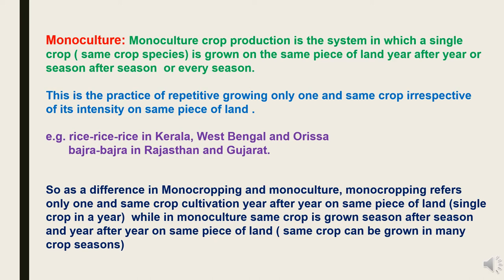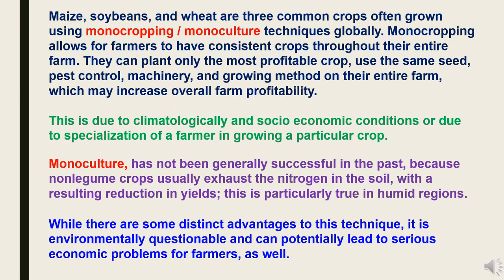Monoculture crop production is the system in which a single crop of the same species is grown on the same piece of land year after year, season after season, or every season. This is the practice of repetitive growing of only one crop irrespective of its intensity on the same land. Examples include growing rice continuously in Kerala, West Bengal, and Odisha in three cropping seasons, and Bajra in Rajasthan and Gujarat. Maize, soybeans, and wheat are three common crops often grown using monoculture techniques globally.